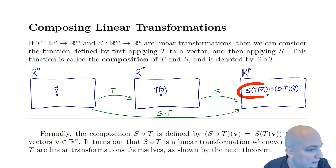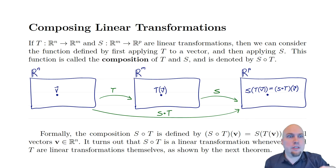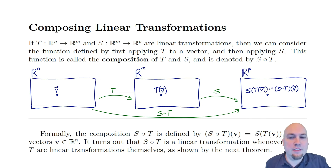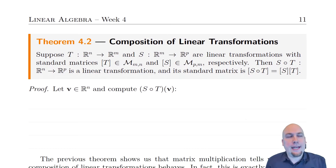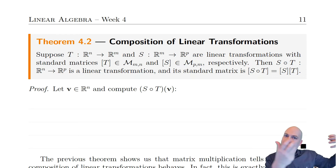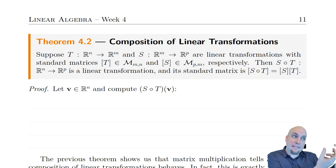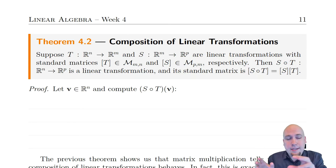That linear transformation we're going to call S composed with T. That little circle in the middle means composed, and that just means do one after the other. So S of T of v is the same thing as S composed with T of v. Maybe you've seen this notation in functions courses or calculus courses — it's the same idea as composing functions of single variables. The remarkable thing that happens is when you do this with linear transformations, you can figure out what the standard matrix of the composed function is from the standard matrices of the individual ones very easily. All you have to do is multiply the standard matrices of the individual linear transformations together.